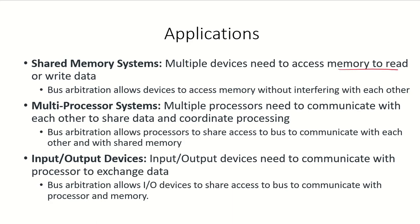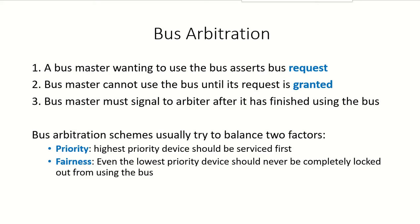In shared memory systems, multiple devices need to access the memory to read or write data, and bus arbitration allows these devices to access memory without interfering with each other. In multi-processor systems, multiple processors need to communicate with each other to share data and coordinate processing, and bus arbitration allows them to share access to the bus. Input/output devices also need to communicate with the processor to exchange data, and bus arbitration allows them to share bus access as well.